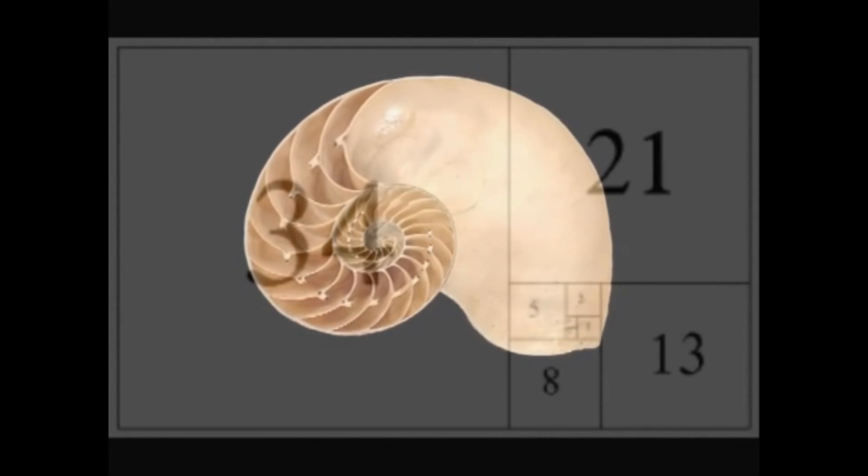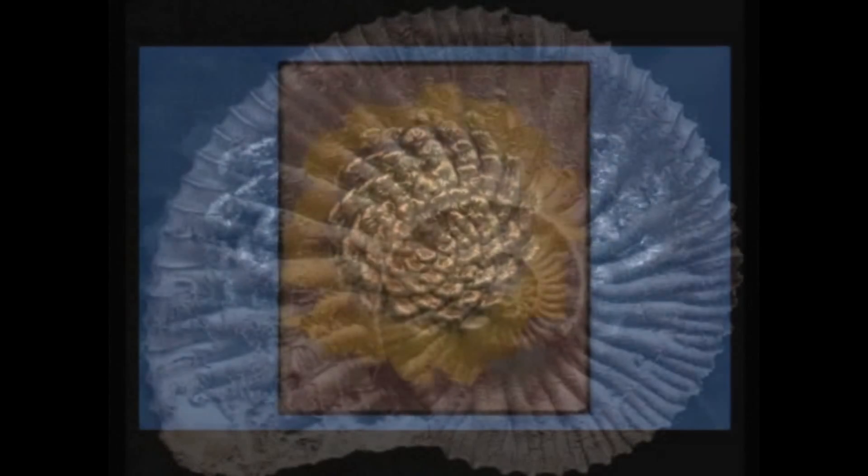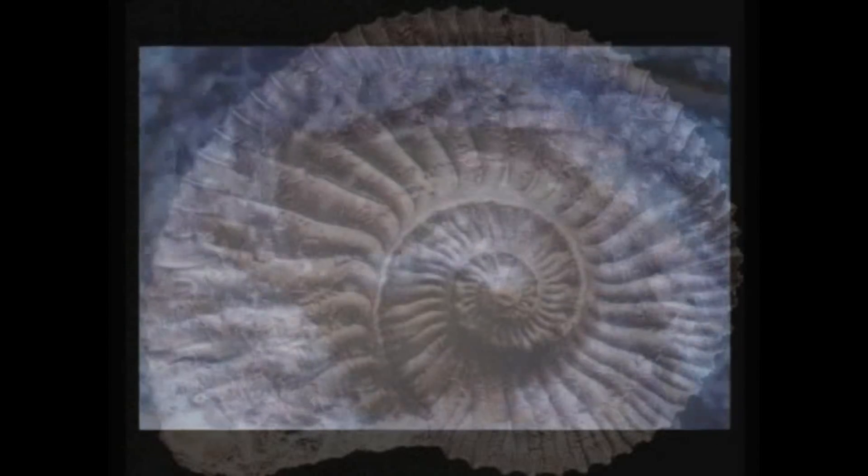Spirals are reflected in structures as diverse as seashells, pine cones, sunflowers, whirlpools, and hurricanes.